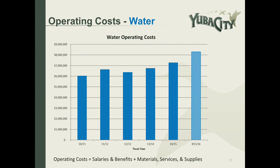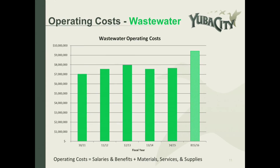When looking at operating costs for water going back to fiscal year 10-11, the fiscal year 15-16 number is based on budget, whereas prior years are actual. In 14-15, the savings of actual versus budget was $466,000, mainly due to savings in salaries and benefits, operation and maintenance, and chemicals. Again, in wastewater, fiscal year 15-16 is budgeted and the other years are actual. In fiscal year 14-15, the savings of actual versus budget was $1.3 million, primarily due to $500,000 for salaries and benefits due to vacancies, $300,000 for heat and power, $200,000 for operation and maintenance, $100,000 for professional services, and $50,000 for chemicals.